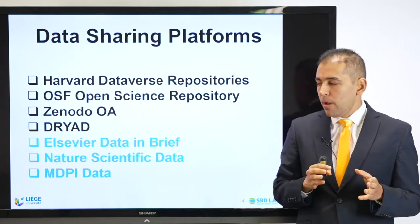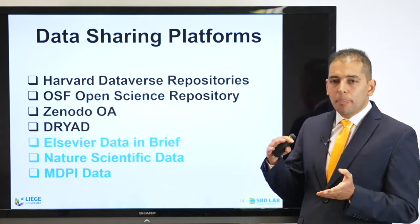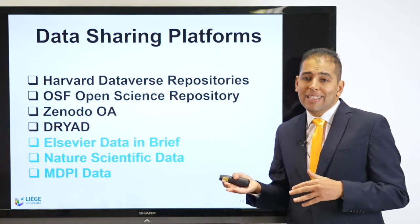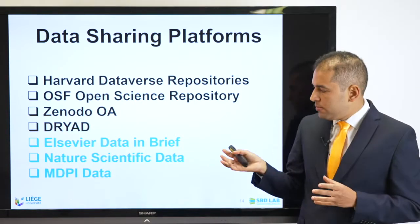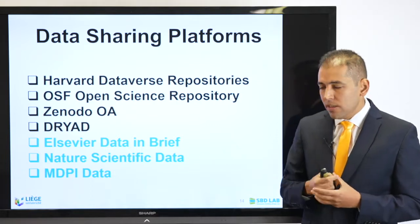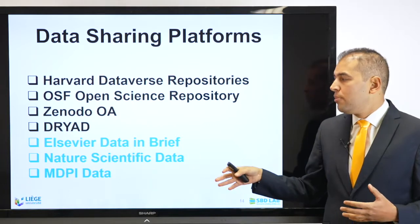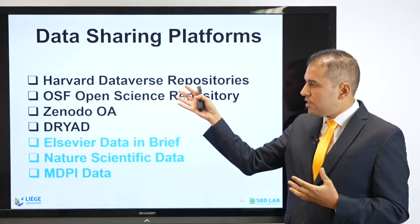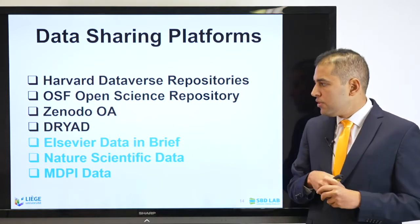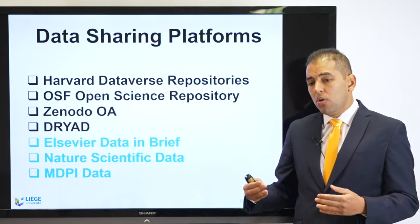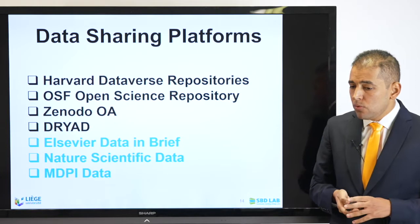Apart from data sharing platforms, there are also journals specifically for datasets — data journals. These include Elsevier's Data in Brief, Nature's Scientific Data, and MDPI's journal called Data. Unlike the platforms where you just publish without review, these journals require your data to go through a peer-reviewing process before acceptance and publication.